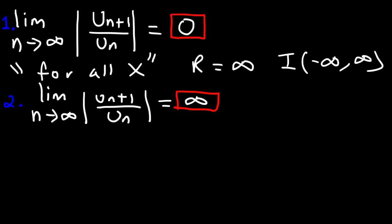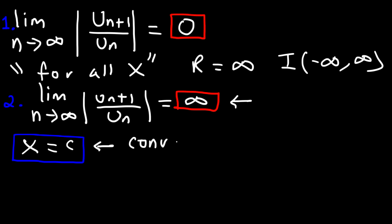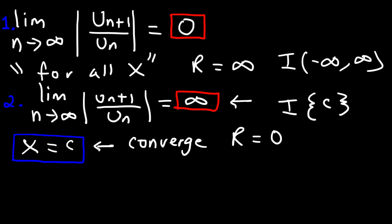It will only converge when x is equal to c. At that point, you're going to get a limit with some expression of n times 0, so the whole limit equals 0. Because according to the ratio test that's less than 1, it converges for that point. But for all other x values not equal to c, you're going to get infinity, and the series will diverge. Because it only converges at one finite number, the radius of convergence is 0, and the interval of convergence is just the x equals c value.